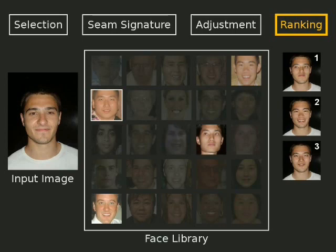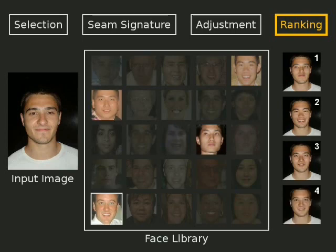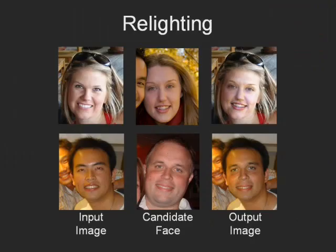Here we show the replacement results for the top-ranked candidates. These examples highlight the importance of the recoloring and relighting stage of our algorithm. Notice how our system is able to compensate for a wide range of color and lighting differences.